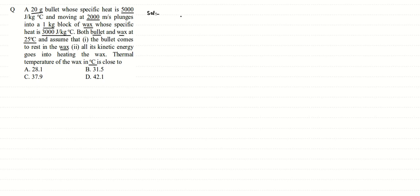The question looks like this. There is a bullet with mass m1 equal to 20 grams, moving with speed V equal to 2000 meter per second. This bullet plunges into a piece of wax with mass m2 equal to 1 kilogram, and the bullet comes to rest. All the kinetic energy of the bullet is lost, and the temperature of the system — both wax and bullet — increases. We have to calculate the final thermal temperature of this system.